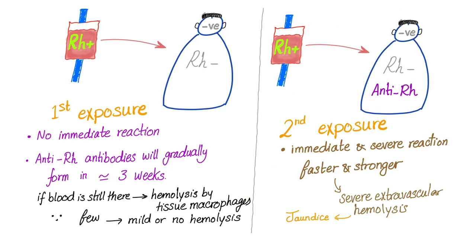Consider a patient who is RH negative receiving RH positive blood for the first time. On first exposure, there is no immediate reaction. The anti-RH antibodies will gradually form — it takes around three weeks. If blood is still present from this transfusion, mild hemolysis may occur, but since most of the transfused blood will have been consumed, the hemolysis will be pretty mild, if any. On second exposure to RH positive blood, you already have anti-RH antibodies from the first exposure, so the reaction will be immediate and severe — faster and stronger, with a bigger hemolysis.